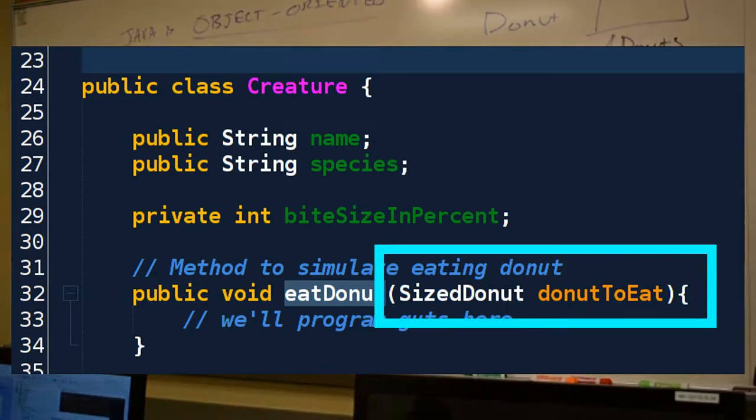The most important method on our creature is public int eat donut. What type, what are we going to feed this method? The input is going to be a what? An object. We're going to make an object called a sized donut, meaning that the donut knows its diameter. And we're going to get to make animals picky eaters, which will be kind of fun.